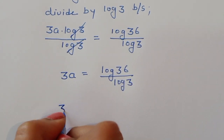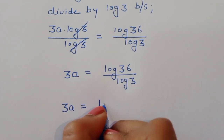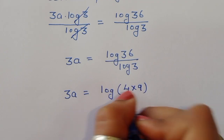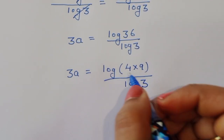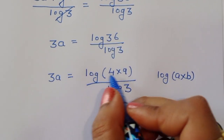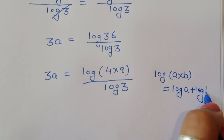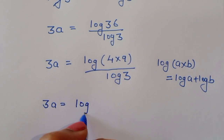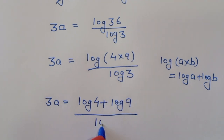Now, 3A is equal to log of 36 divided by log of 3. We can write 36 as 4 times 9, so this becomes log of 4 times 9, divided by log of 3. Using the formula log of A times B equals log A plus log B, we can write 3A is equal to log of 4 plus log of 9, all divided by log of 3.